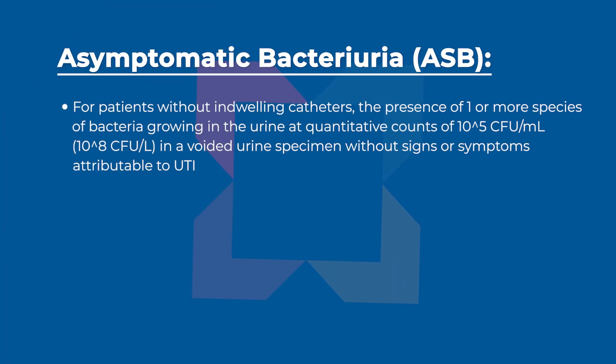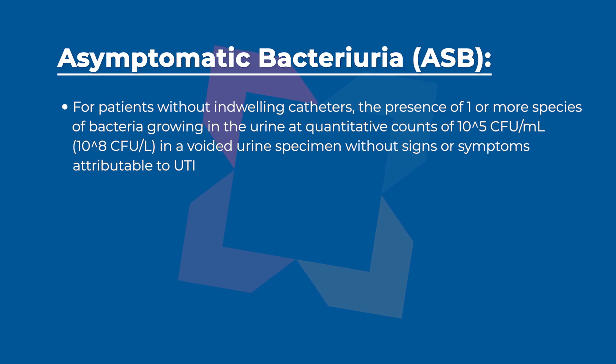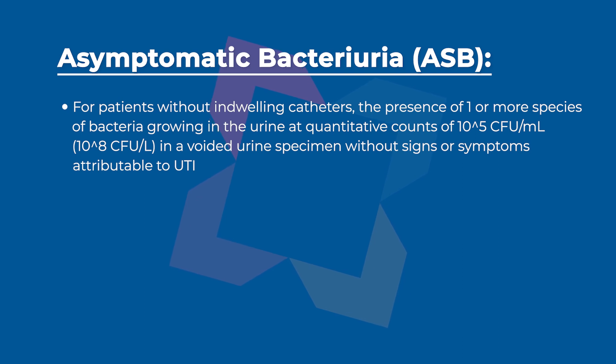Before we get into the recommendations, the IDSA does include a couple of key points. Starting with the definition of asymptomatic bacteriuria: for patients without an indwelling catheter, ASB is defined as the presence of one or more species of bacteria growing in the urine at a quantity of greater than 10 to the 5th CFUs per milliliter, or greater than 10 to the 8th CFUs per liter, in a voided urine specimen without signs or symptoms attributable to a UTI.